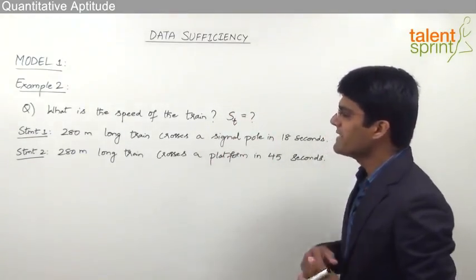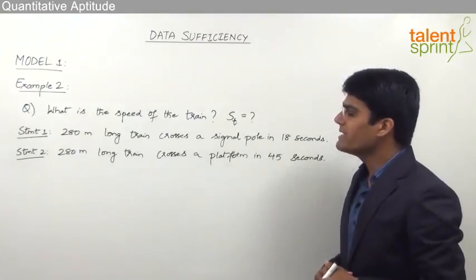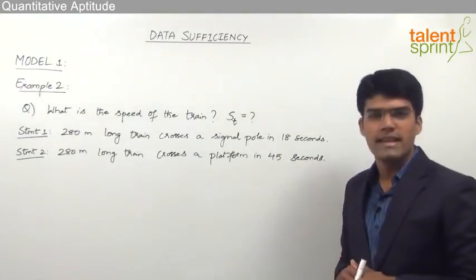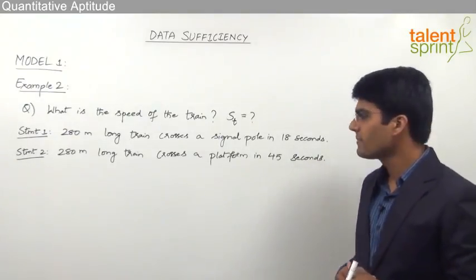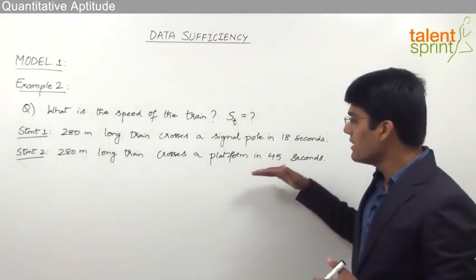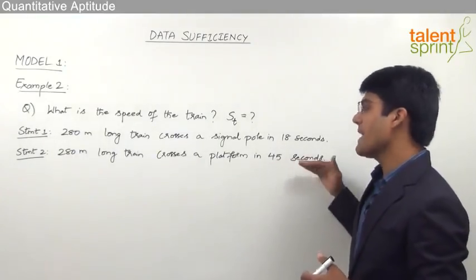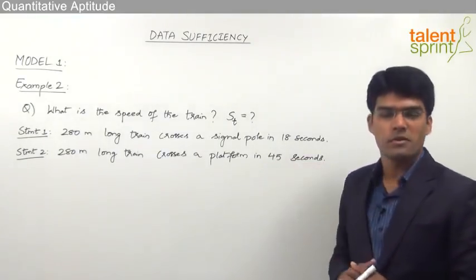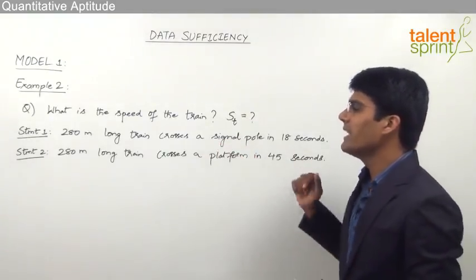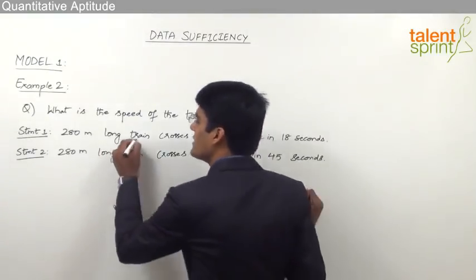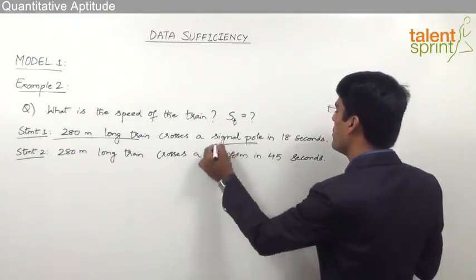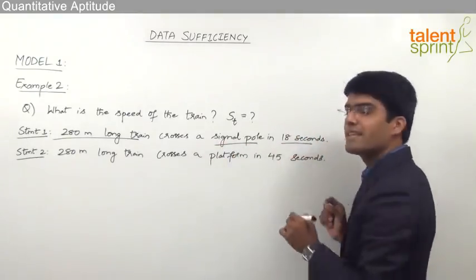The first statement says a 280-meter long train crosses a signal pole in 18 seconds, and the second statement says a 280-meter long train crosses a platform in 45 seconds.